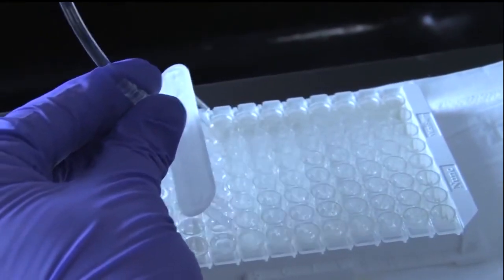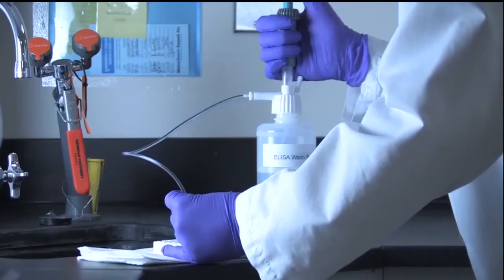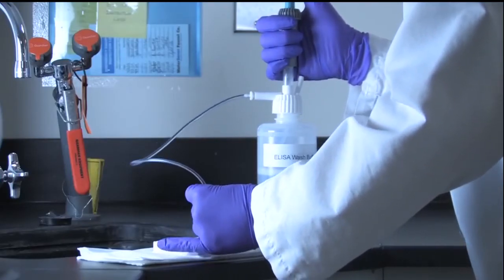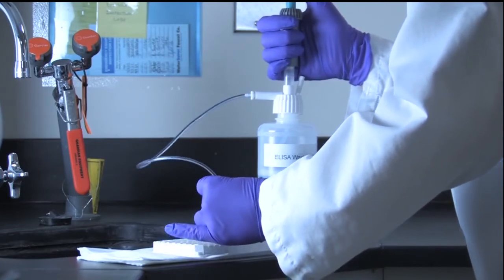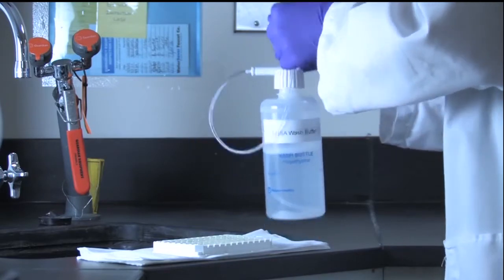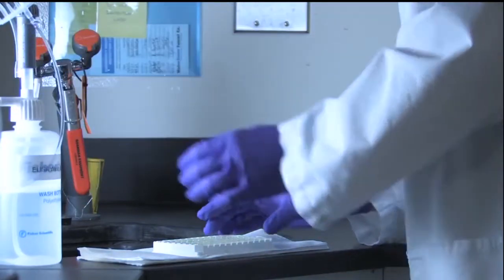Using the prepared wash bottle, fill all wells completely with wash buffer moving across the plate. Working methodically, the liquid should be dispensed with force in order to properly agitate the contents and remove any unbound material.